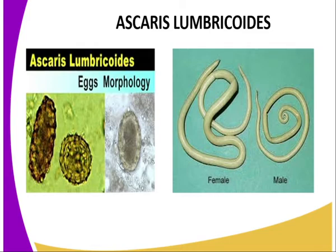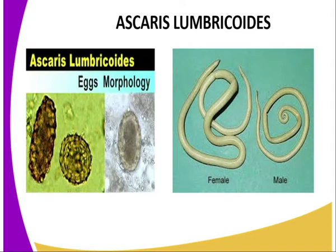The larva penetrates the intestinal wall and enters the bloodstream. They move to the liver and then to the heart and lungs. In the alveoli, they grow and moult twice. The larva then migrate up to the trachea, where they cause irritation and so are coughed out and may be swallowed down into the esophagus, stomach and small intestine, where they finally mature into adults.